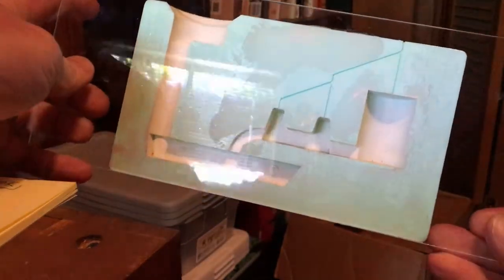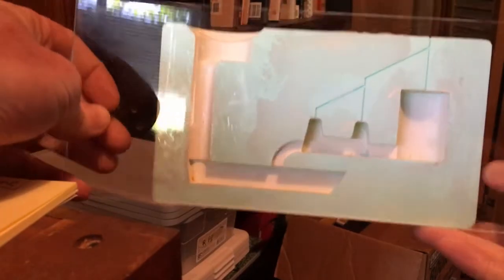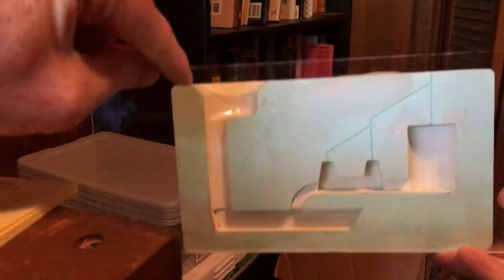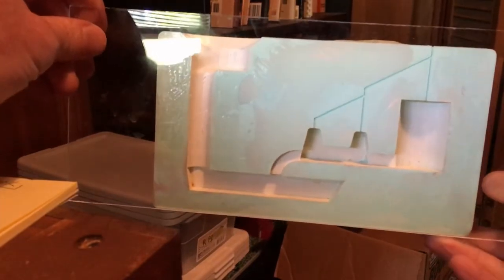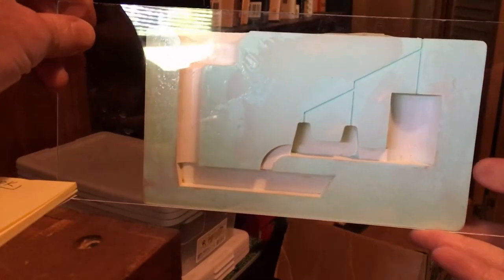So instead, I printed this typical cross section and just used plexiglass and used water with food coloring in it instead of aluminum.